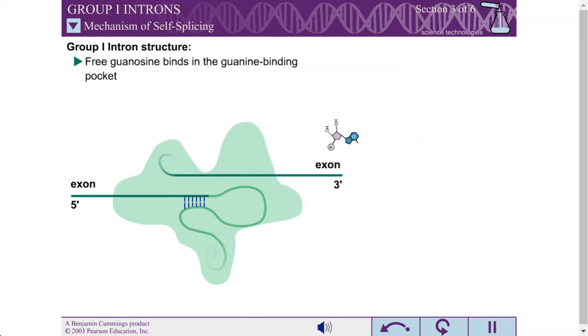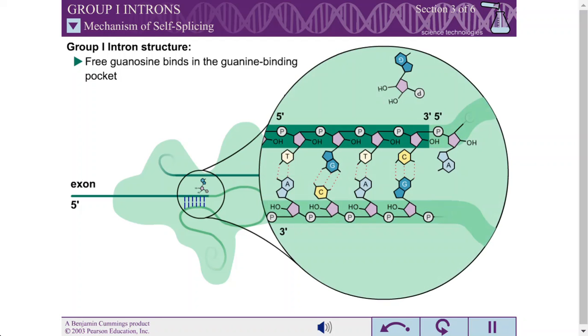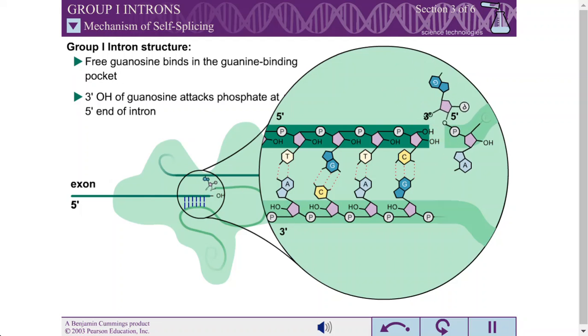To begin self-splicing, a free guanine-containing ribonucleotide binds in the guanine binding pocket. The 3' hydroxyl of this guanosine attacks the phosphate at the 5' end of the intron. This transesterification reaction fuses the guanosine to the 5' free end of the intron.